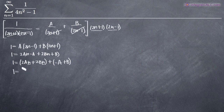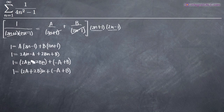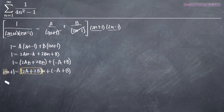We'll factor out the n, giving us (2A plus 2B) times n, plus negative A plus B. Now we equate coefficients on the left and right-hand sides. On the left-hand side we have 0n plus 1 — there's no n term. So because the coefficient on the n term on the left is 0, the coefficient on the right must also equal 0. So we get 2A plus 2B equals 0.